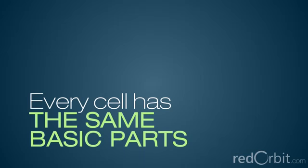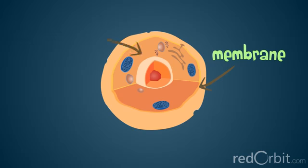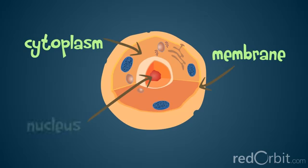However, every cell, no matter what its job, has the same basic parts. All human cells have an outer border that's the boundary of the cell, called the cell membrane. A liquid material called cytoplasm is inside the cell membrane, and there's a large structure suspended in the cytoplasm called the nucleus.